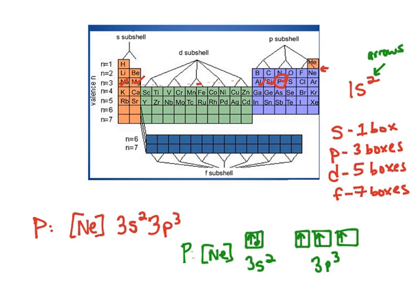So that's the orbital notation for P. Let's say we were doing S instead. S has the configuration of 3P4. Then I would start to double up my electrons. They would be paired, and I would pair it by putting the opposite spin or putting the arrow in the opposite direction.